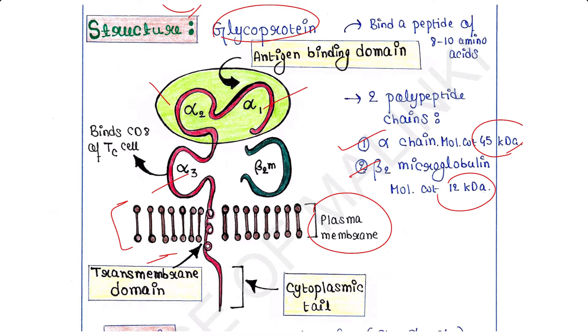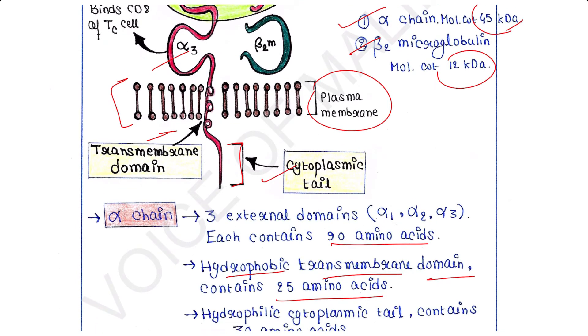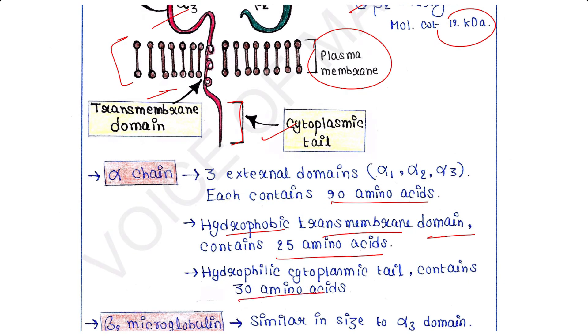The alpha chain also contains a hydrophilic cytoplasmic portion that contains 30 amino acids. So this is the cytoplasmic tail that contains 30 amino acids.